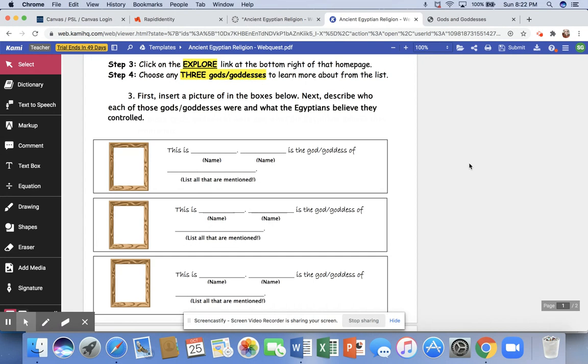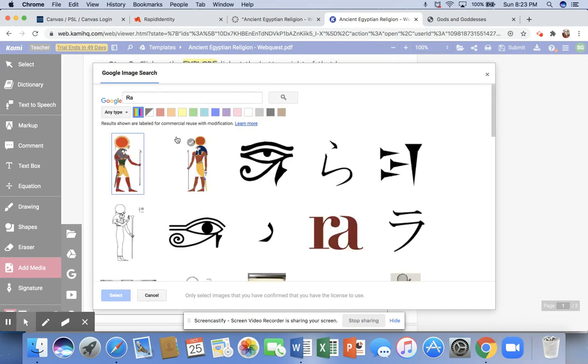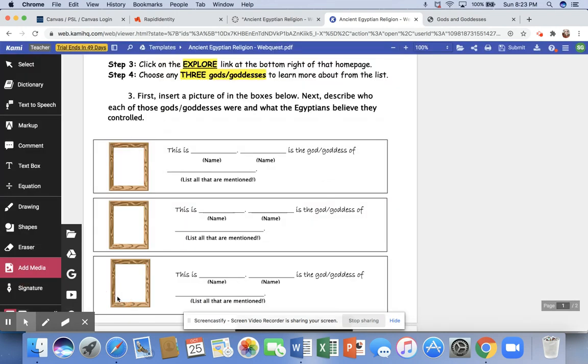In addition, you also have to add a picture. To do that, you're going to click Add Media. If you choose the capital G, you'll be able to search for an image straight from Google. I'm going to choose the most important of the Egyptian gods, and that is Ra. Once you select the image that you want, you're going to click the Select button.